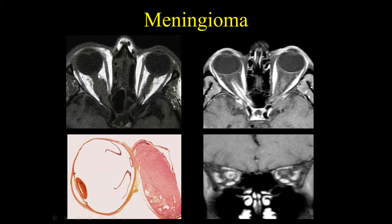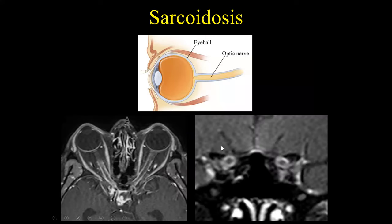Here is a patient with a so-called intraconal mass involved in the orbit. On contrast-enhanced T1-weighted images, there is a central area not enhancing but with peripheral enhancement. On coronal images, we see diffuse enhancement of the dura and compression of the optic nerve. If you understand that anatomy and see diffuse enhancement with compression of the optic nerve, you can suggest the diagnosis of meningioma. This is the classic tram track appearance seen with optic nerve meningiomas.